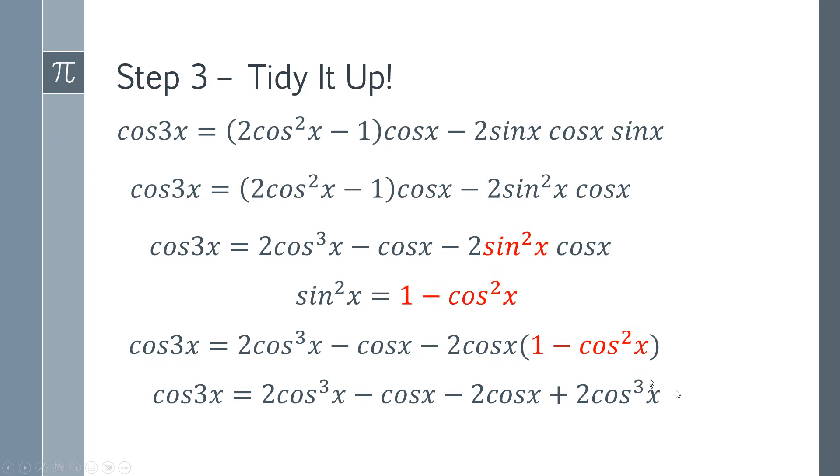Now we can look at what we've got all together. We've got a minus cos x and a minus 2 cos x, that's going to combine to give minus 3 cos x. And we've got 2 cos cubed x, another 2 cos cubed x, so they're going to both combine to give 4 cos cubed x. And there we have the final answer.